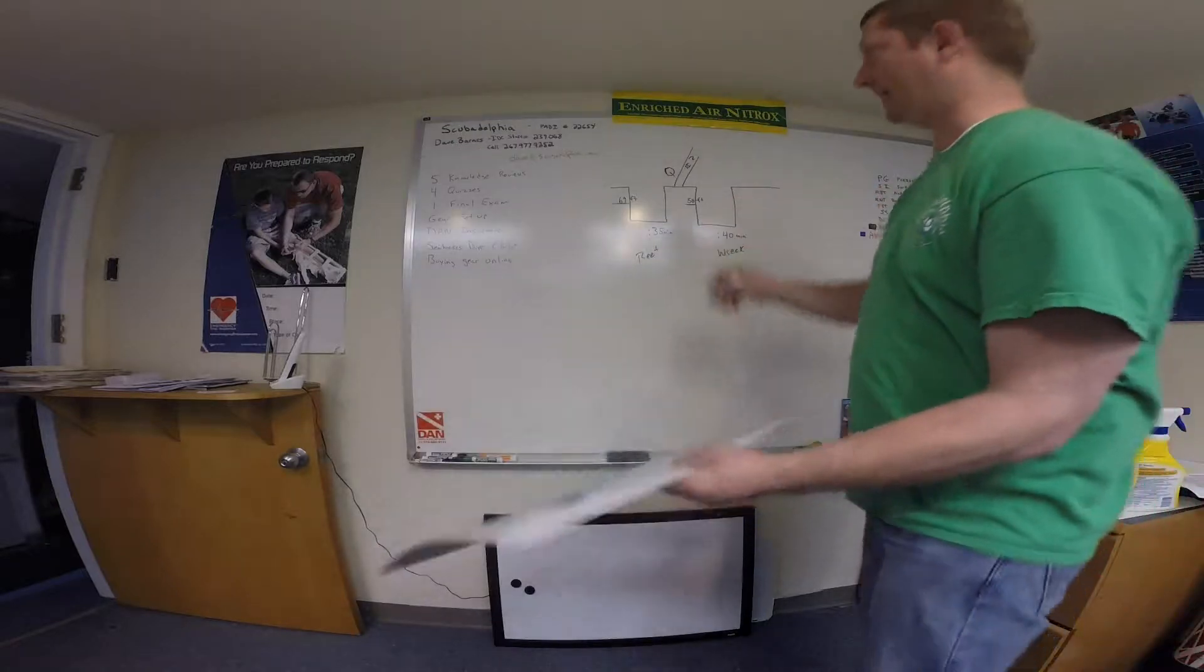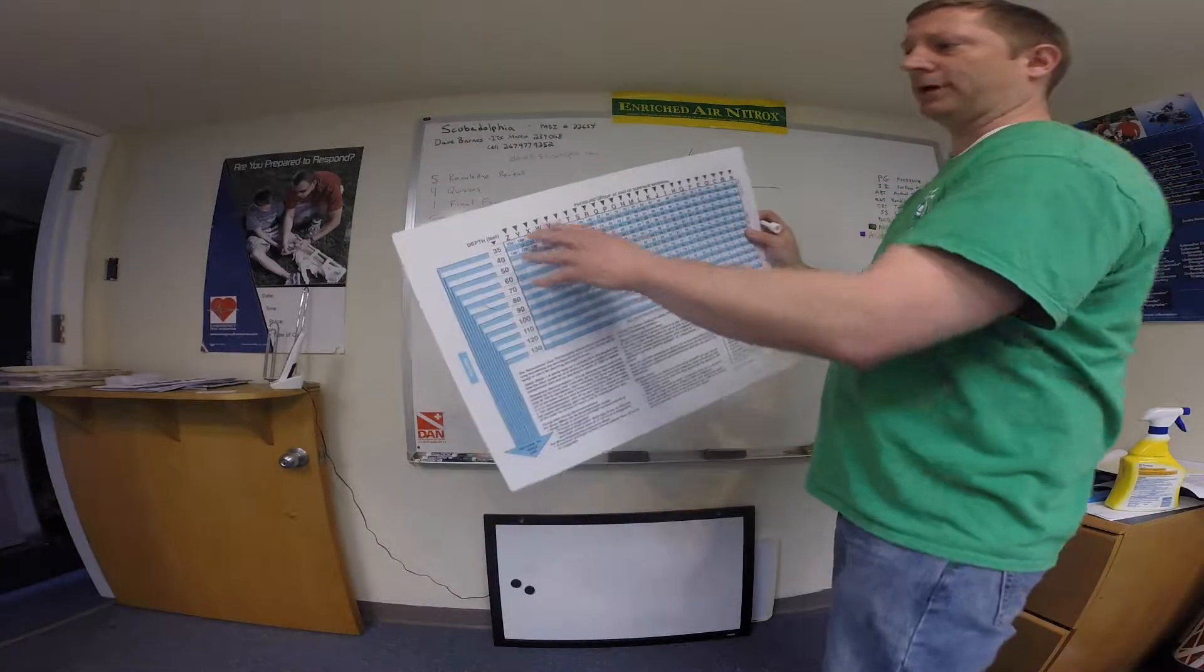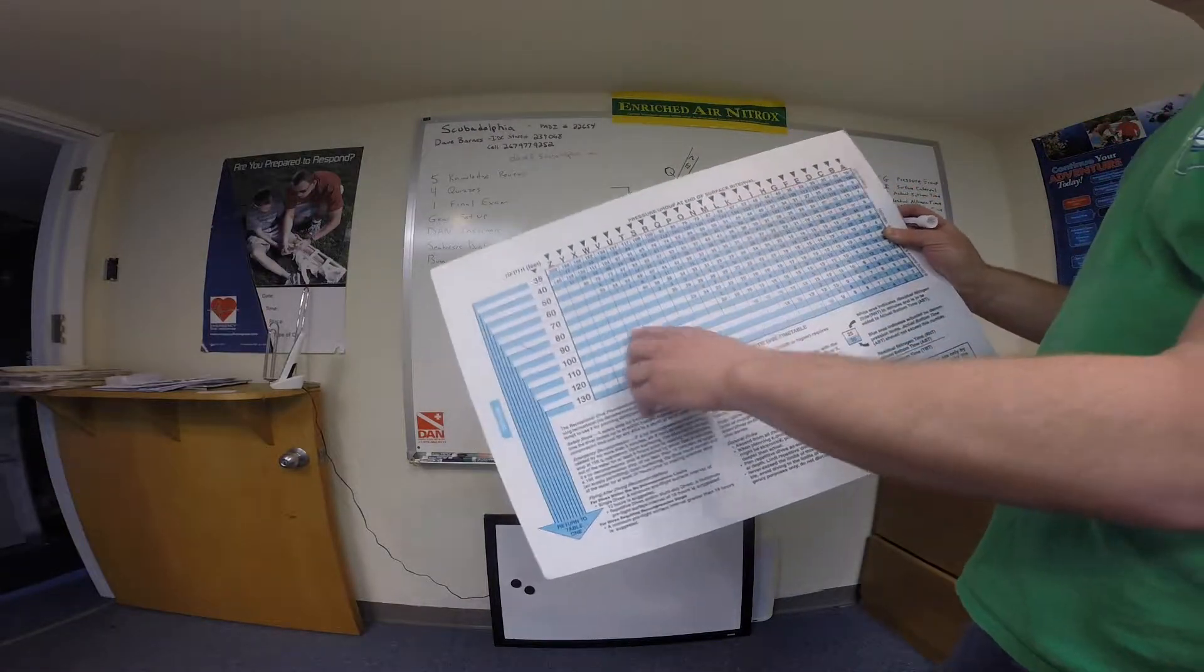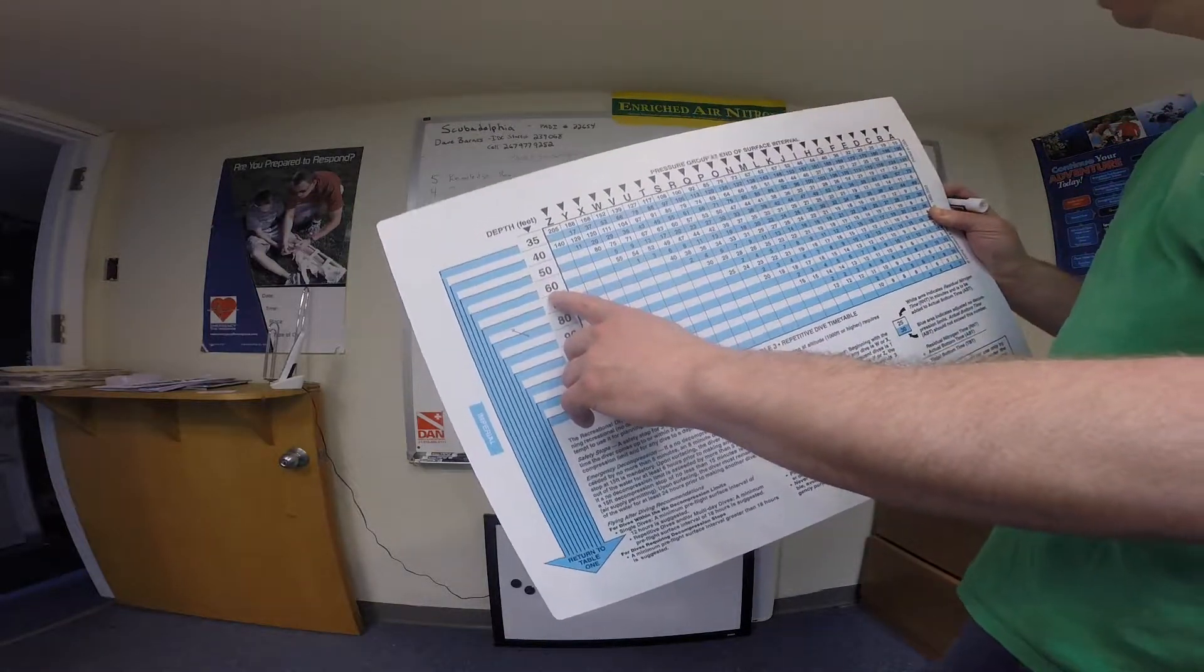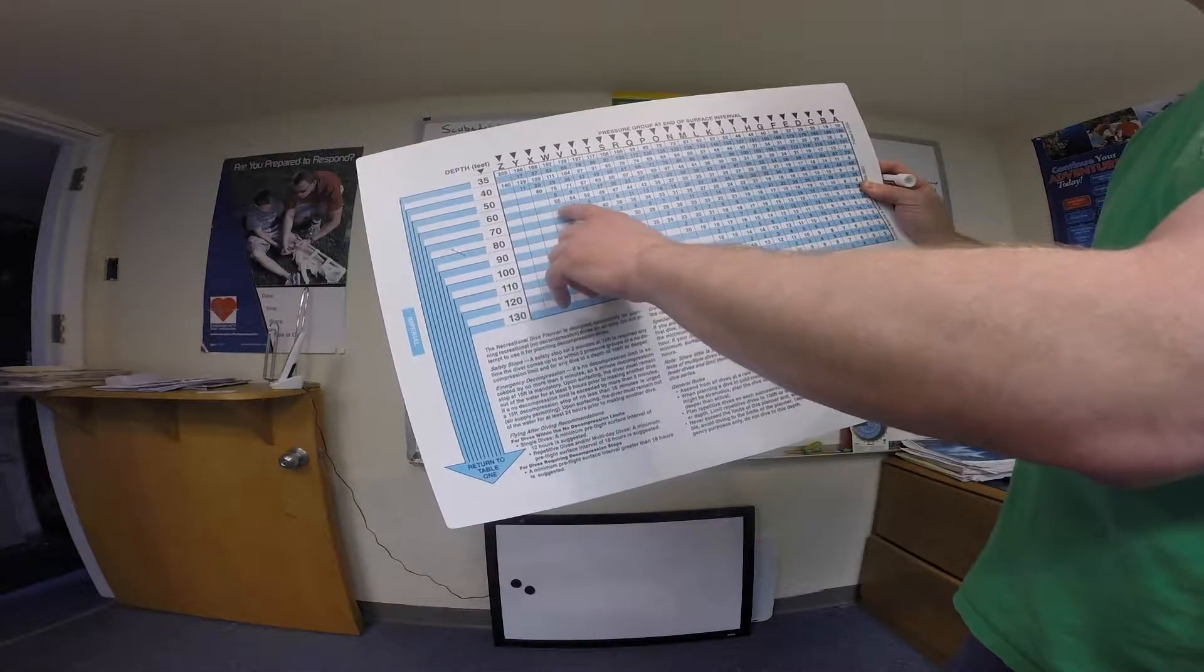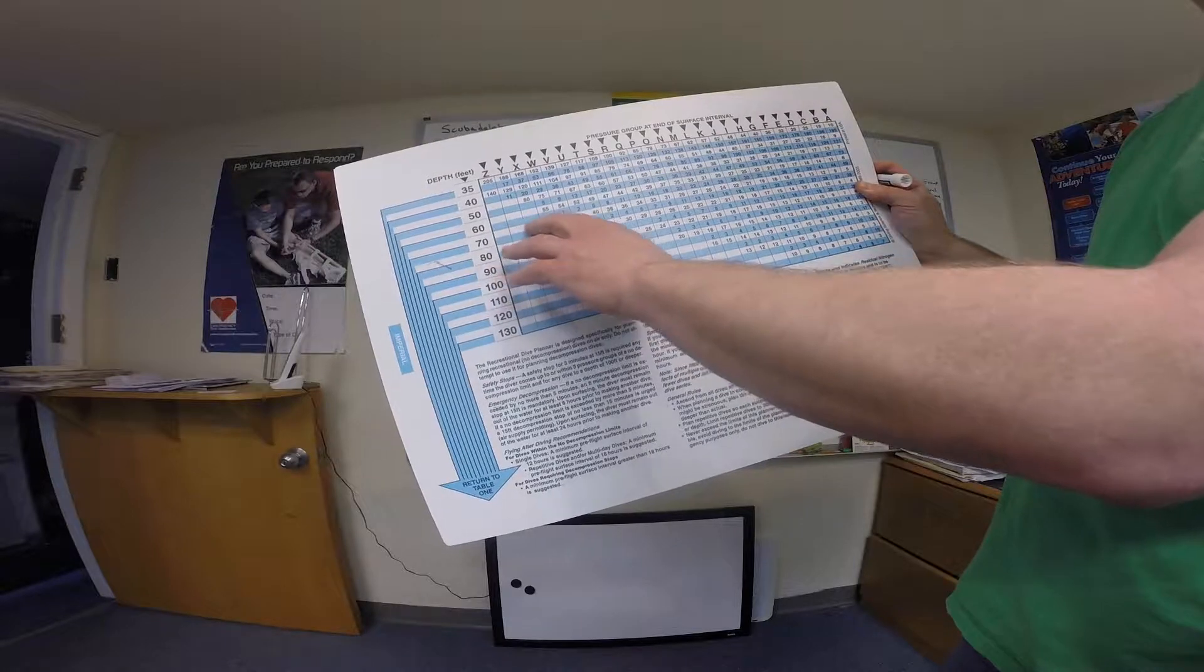I'm going to flip to the back table for the second dive. And now the pressure groups are along the top and the depths are along the sides a little bit different. 58 feet, we'll round to 60. So we'll find our 60 here. And we're going to stay for 40 minutes. So 60 feet we're planning for, come across the blue line here, the adjusted no decompression line.